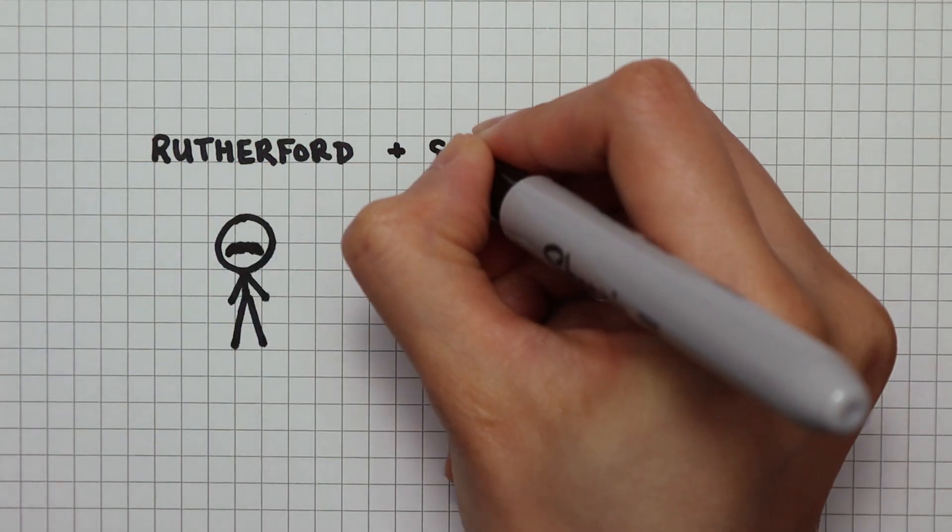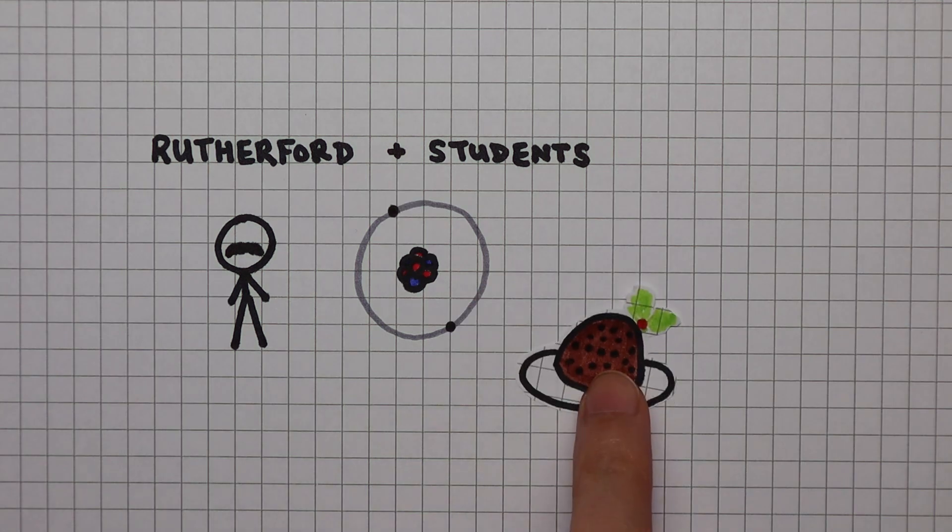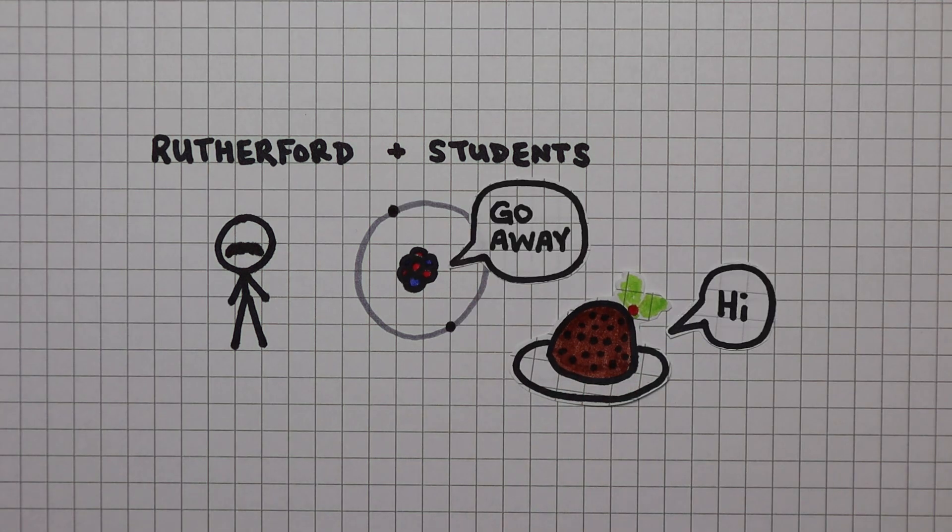Thanks to Rutherford and his students, we now have the correct model of an atom. But how did he know J.J. Thompson was wrong?